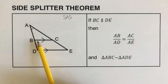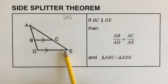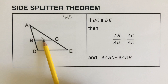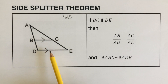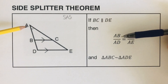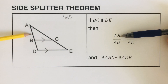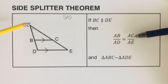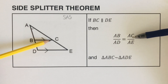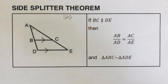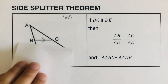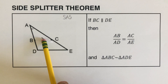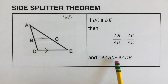If both line BC and line DE are parallel — the parallel indication is these two arrowheads — then it means that the length AB over the whole thing AD is equal to AC over the whole thing AE. Therefore, we can conclude that the two triangles, the small triangle and the big triangle, are similar to each other.